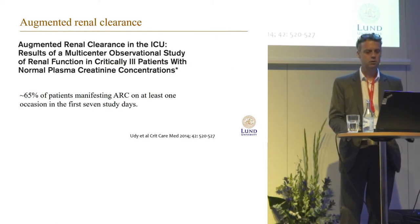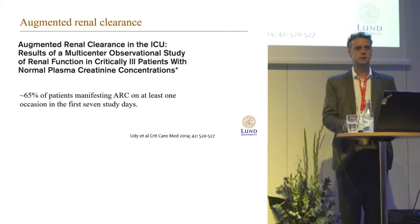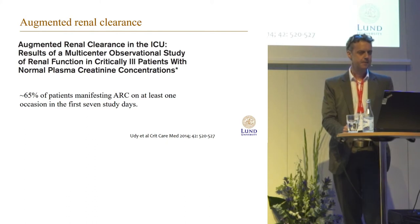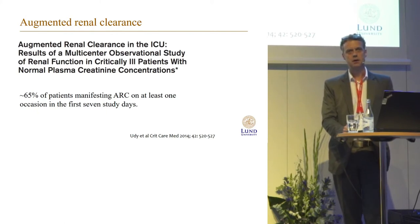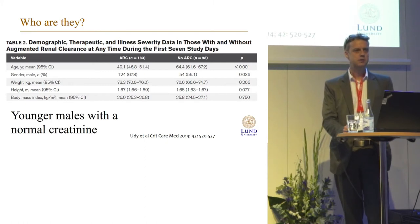I want to show you this study from Australia, looking at nearly 300 critically ill patients, examining augmented renal clearance — defined as clearance above 130 mL/min per square meter — and how often these patients occur. In this cohort, they found that around 65% were actually having augmented renal clearance. So these patients are not that rare. And who were they? They were younger males with a normal creatinine — so those are the patients you should be aware of.